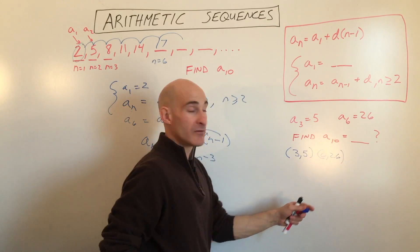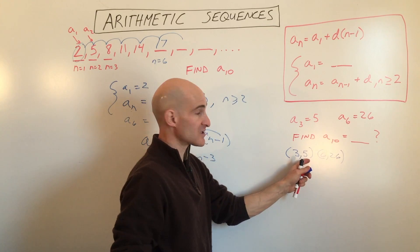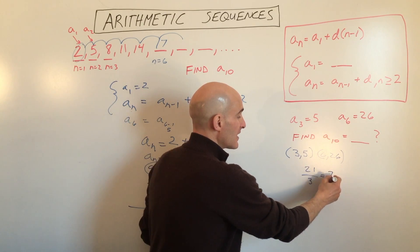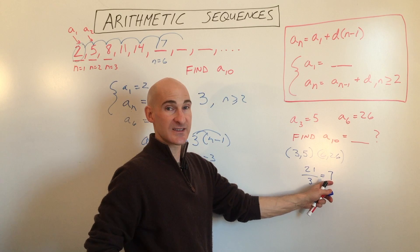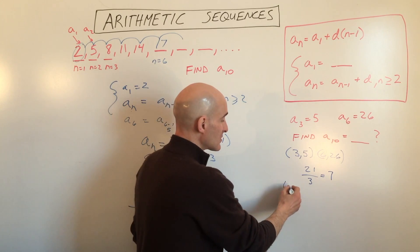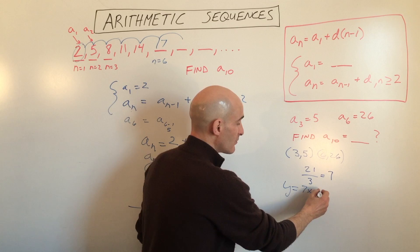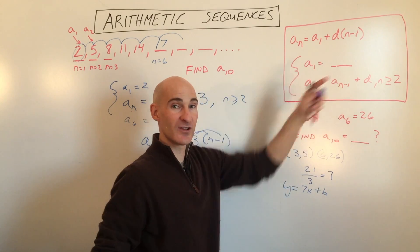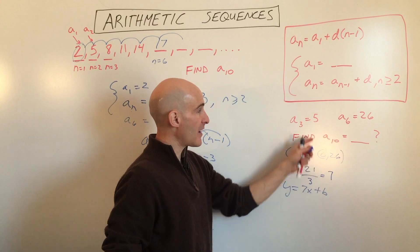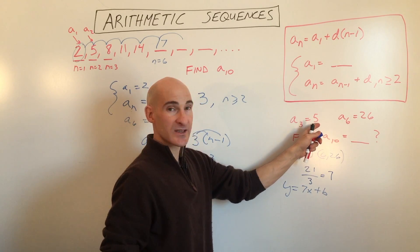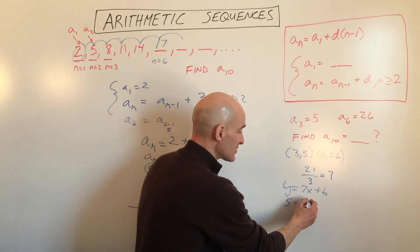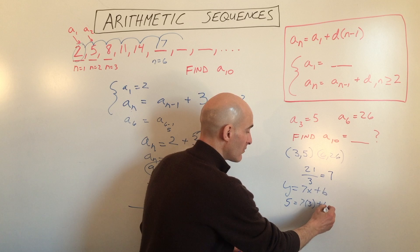And then what we're going to do is we're going to find the slope. So 26 minus 5, which is 21, 6 minus 3, which is 3. And so you can see we have a slope of 7. So what I'm going to do is I'm going to go y equals 7x plus b. So I'm just treating this like two points, finding the equation of a line. And to find that b value, we're just going to put in one of these points. So when x is 3, y is 5. 3 is the input, 5 is the output.